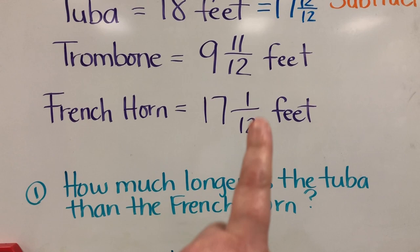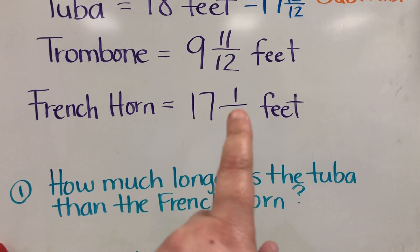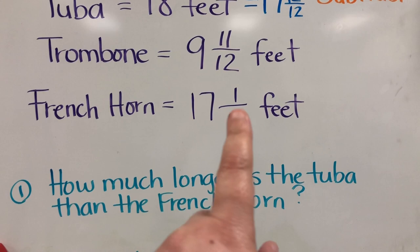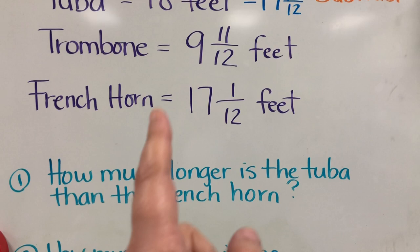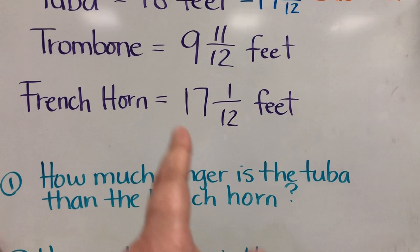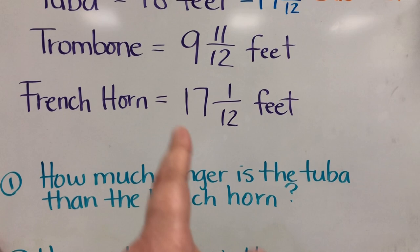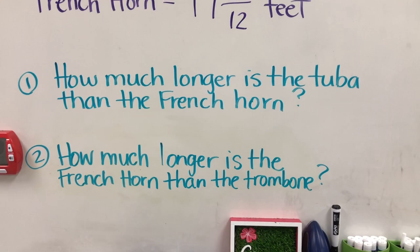For the second question, they needed to subtract 17 and 1-twelfth minus 9 and 11-twelfths. Since 1 minus 11 required regrouping, they renamed 17 and 1-twelfth by taking one whole away from 17, leaving 16, and adding 12-twelfths to 1-twelfth, making 16 and 13-twelfths. Then they could subtract: 13-twelfths minus 11-twelfths is 2-twelfths, and 16 minus 9 is 7. Every team was able to show that answer. Then we watched the rest of the video to see how Professor Berger solved it and students compared their method with his.